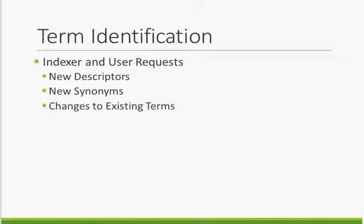First, we need to identify terms to be added and terms to be changed. Our primary sources of information are ERIC indexers and users. ERIC indexers see ERIC content every day and note where there are gaps or changes in the vocabulary. ERIC users bring perspectives from research as well as practice and provide subject area expertise. Indexers and users may request new descriptors, new synonyms, and changes to existing terms.